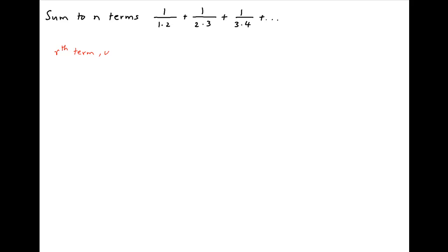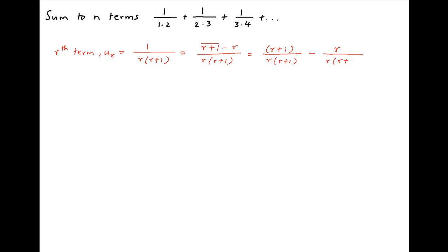The r-th term of the given series, denoted by ur, is equal to 1 upon r times r plus 1. This can be written as r plus 1 minus r, divided by r times r plus 1. This equals r plus 1 upon r times r plus 1, minus r upon r times r plus 1. In the first term, r plus 1 cancels across numerator and denominator. In the second term, r cancels. Therefore, ur simplifies to 1 upon r minus 1 upon r plus 1.